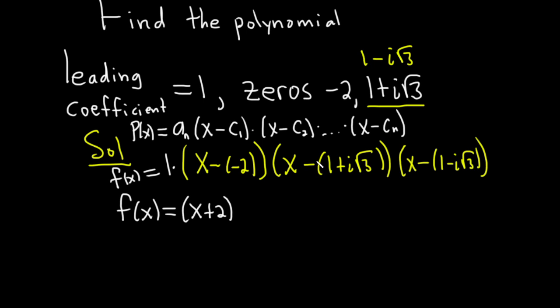And then here we can distribute the negative. There's an invisible negative 1 here. This will be x minus 1. And then negative 1 times the positive i square root of 3 is minus i square root 3.